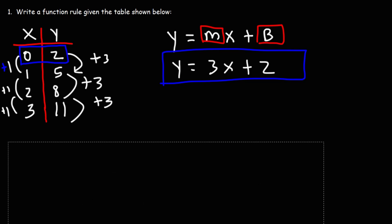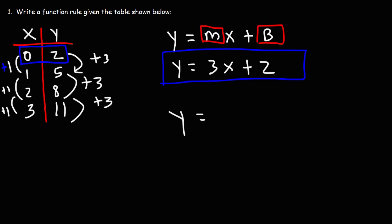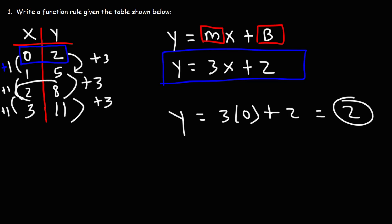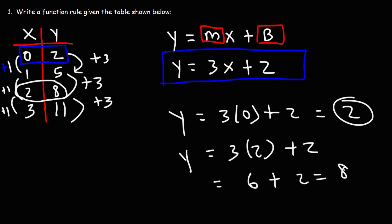We can check the work. If we plug in zero for x, we get two — three times zero is zero, and zero plus two is two. If we plug in two for x, we get eight for y — three times two is six, and six plus two is eight. So this equation correctly describes the pattern of numbers in the table.